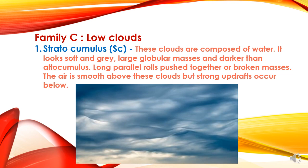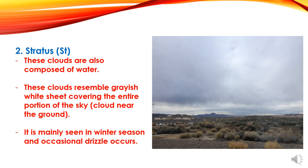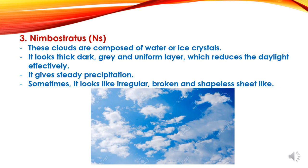Now we will study about Family C — low clouds. The first sub-category is Stratocumulus Clouds. These clouds are composed of water. They look soft and gray with large globular masses, darker than Altocumulus. They form long parallel rolls pushed together or broken masses; air is smooth above these clouds but strong updrafts occur below. The second sub-category is Stratus Clouds, also composed of water. They resemble a grayish-white sheet covering the entire sky, are mainly seen in winter, and occasional drizzle occurs. The third sub-category is Nimbostratus Clouds, composed of water or ice crystals. They look thick, dark, gray, and form a uniform layer that reduces daylight effectively. They give steady precipitation, and sometimes look irregular, broken, and shapeless.